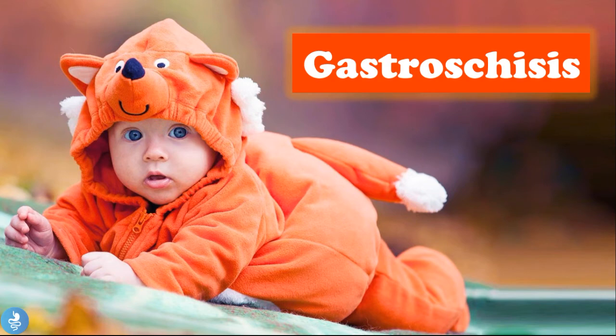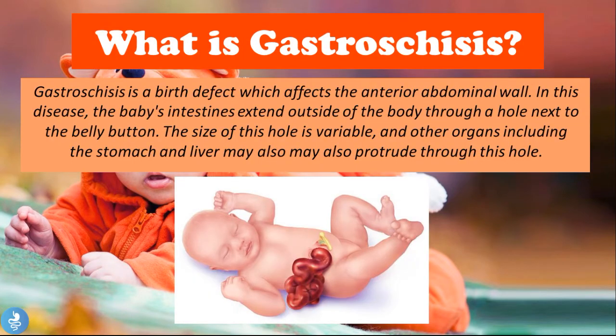Welcome to How to Gastro. In today's video we'll be talking about gastroschisis. Gastroschisis is a birth defect which affects the anterior abdominal wall. In this disease, the baby's intestines extend outside of the body through a hole next to the belly button. The size of this hole is variable, and other organs including the stomach and liver may also protrude through this hole.